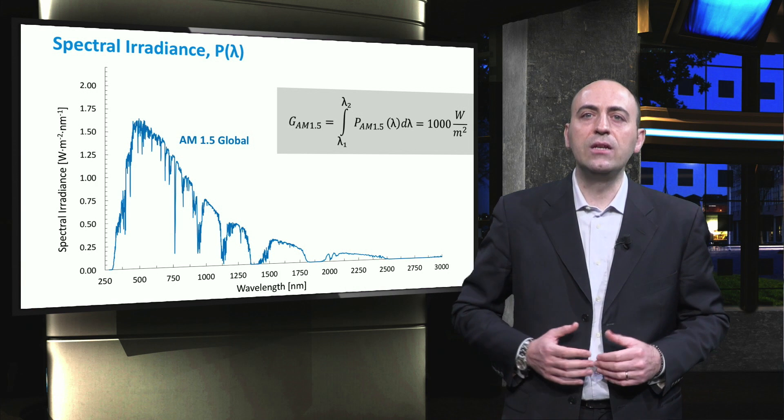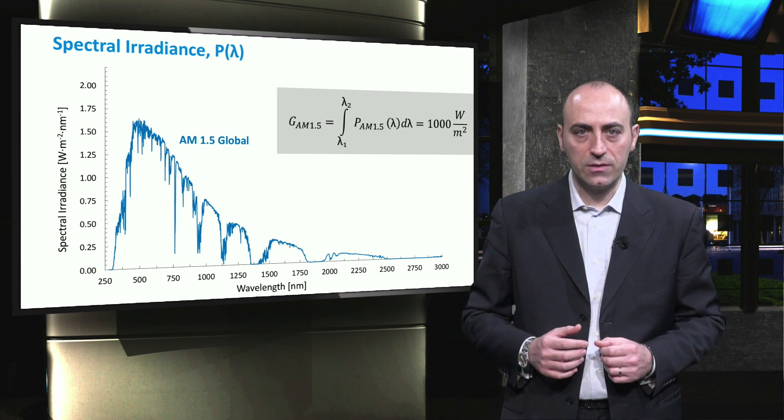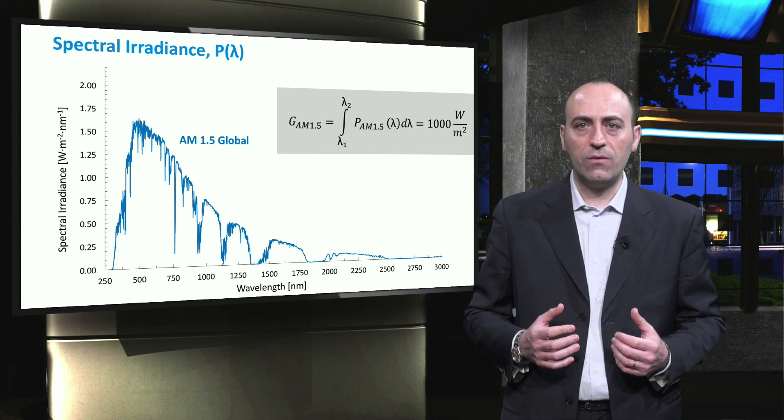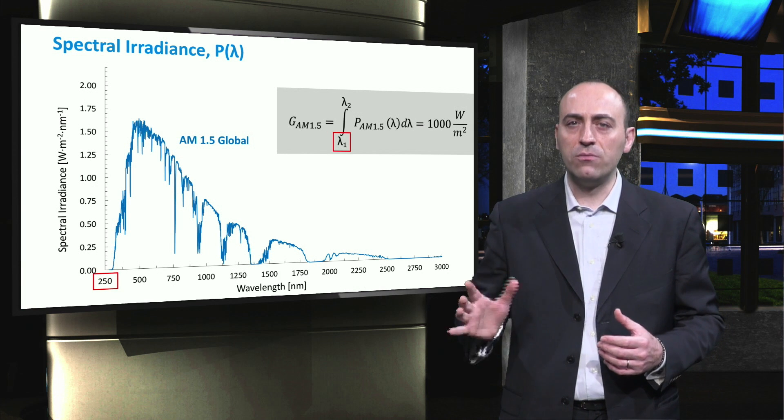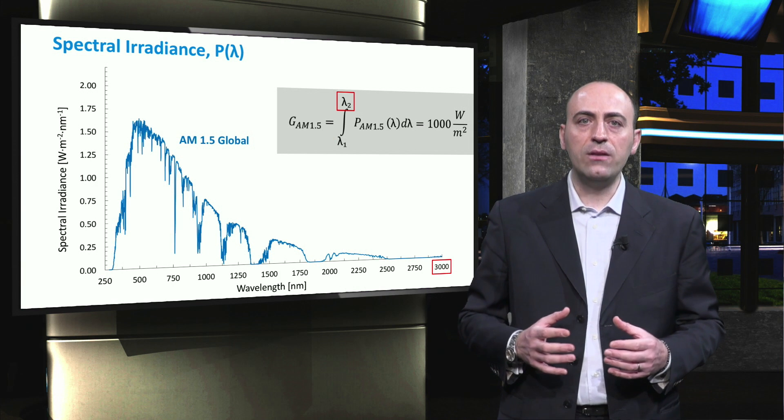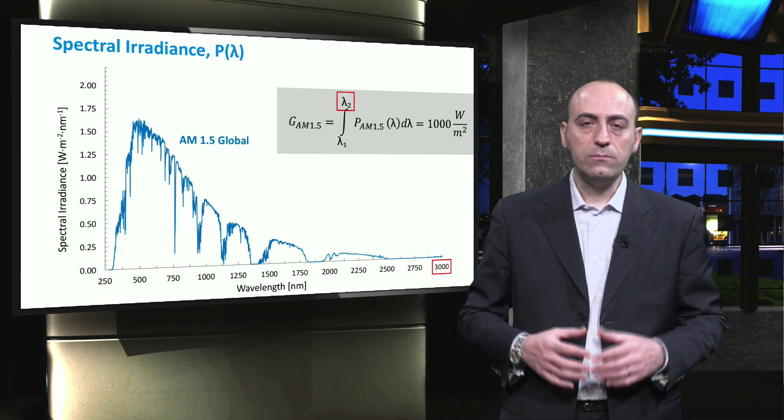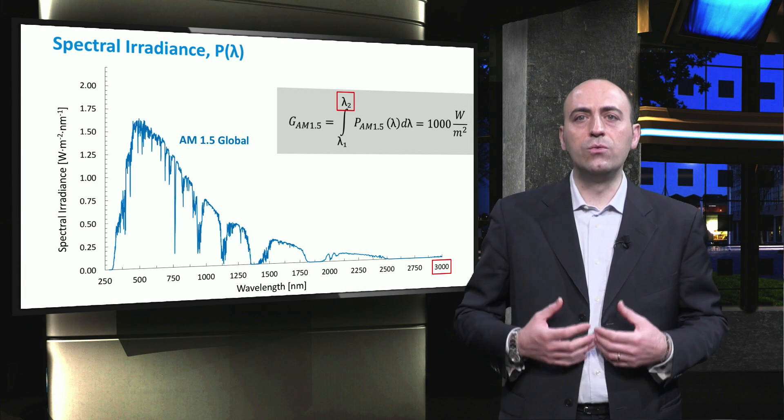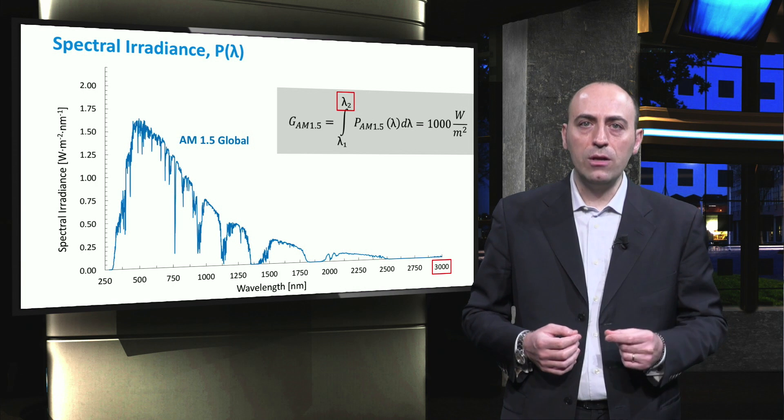This equation illustrates the integral of the AM 1.5 global spectral irradiance. When we consider the entire wavelength interval that goes from 250 nm to the infrared, around 3000 nm, then the outcome of this integral is 1000 Watt per square meter. Such a number is used to evaluate the performance of solar cells and modules in laboratories and industry.